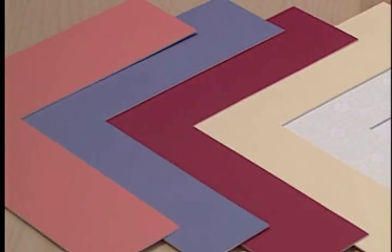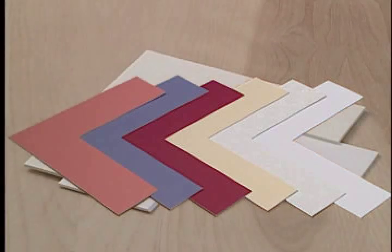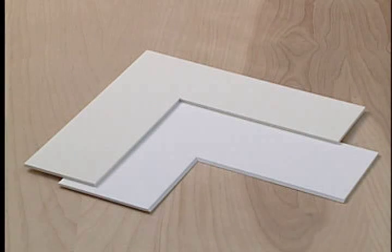This cotton-based matboard is used when only a naturally acid-free product can be in contact with the artwork. Another type of matboard used for priceless pieces or items displayed in museums is a 100% cotton-based product referred to as conservation, archival, or museum board.